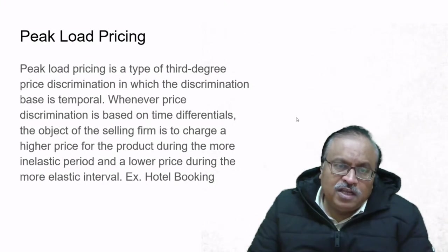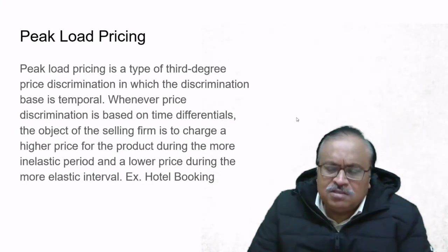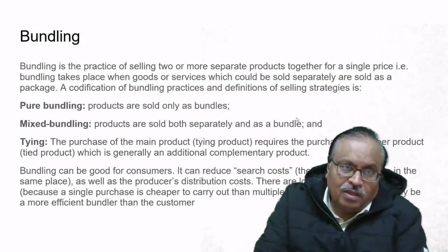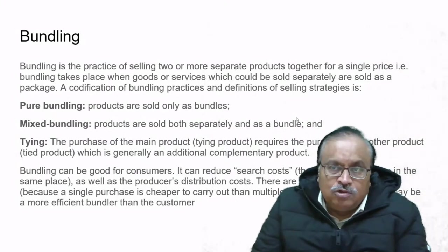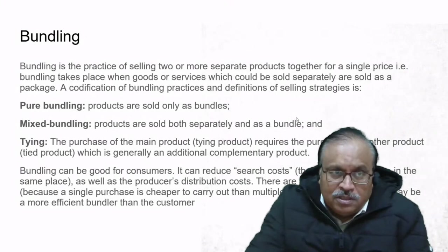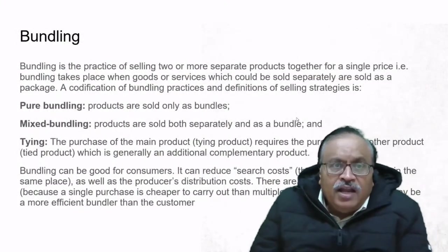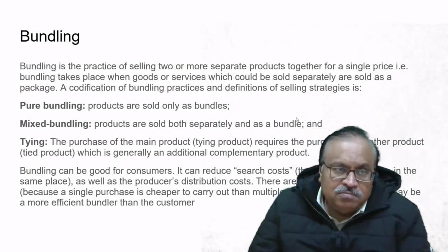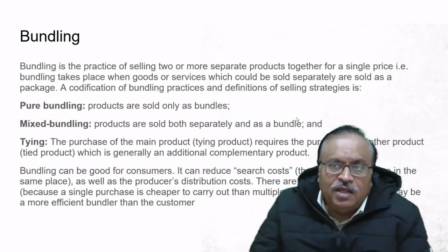So the object of the selling firm is to charge a higher price during the more inelastic period and a lower price during the elastic period. Now, bundling: bundling is the practice of selling two or more separate products together for a single price. Bundling takes place when goods or services that could be sold separately are sold as a package.